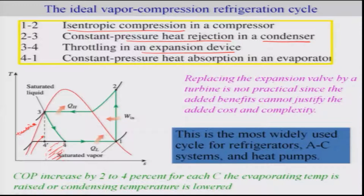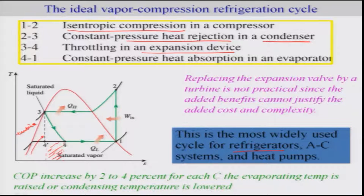This ideal vapor compression refrigeration cycle is commonly used for refrigerators, air conditioning systems, and heat pumps. It should be noted that the coefficient of performance increases by 2 to 4 percent for every degree Celsius the evaporating temperature is raised or the condensing temperature is lowered.